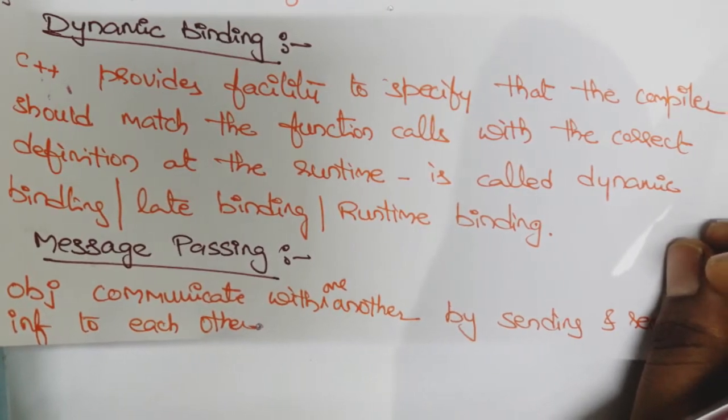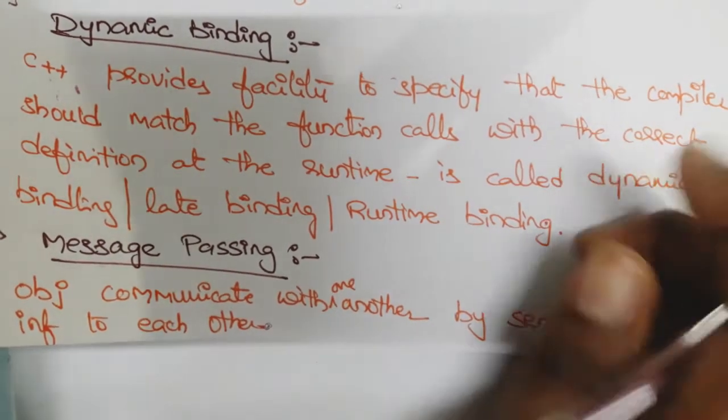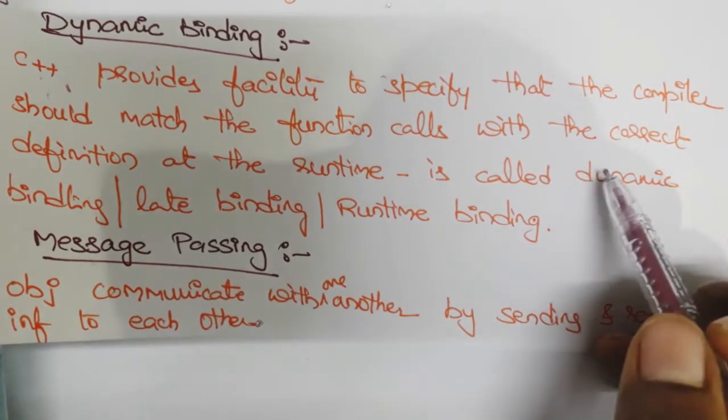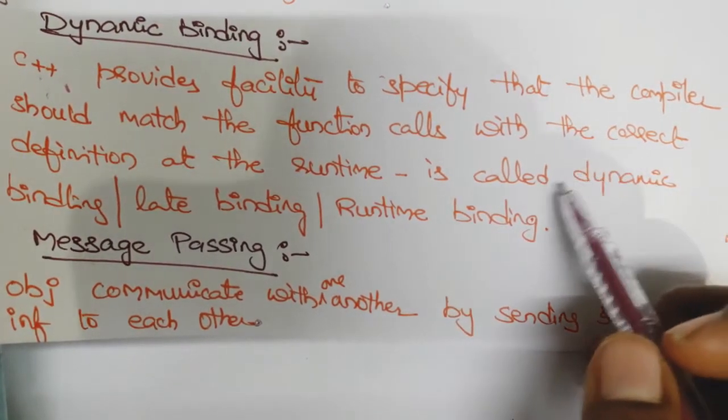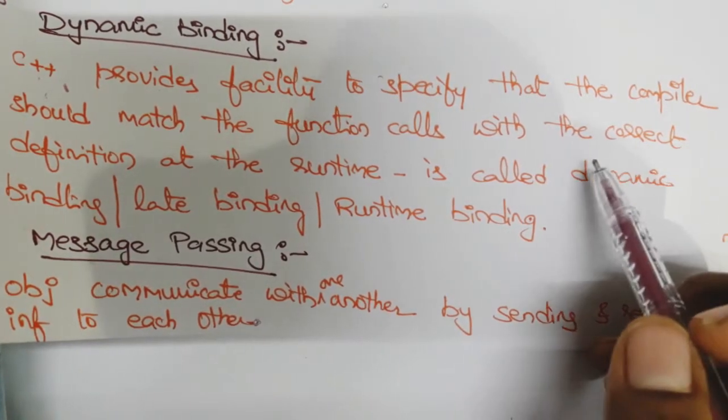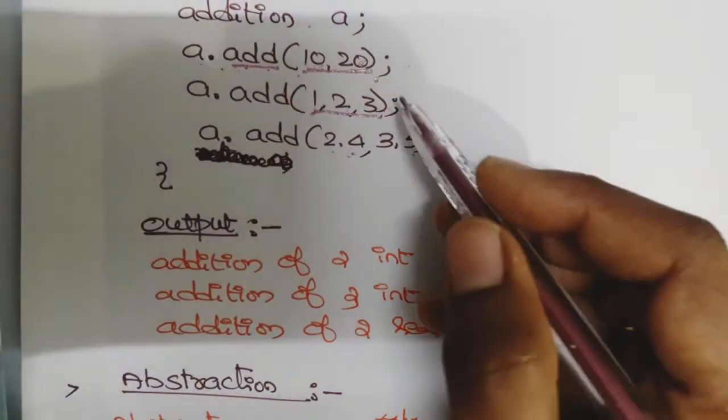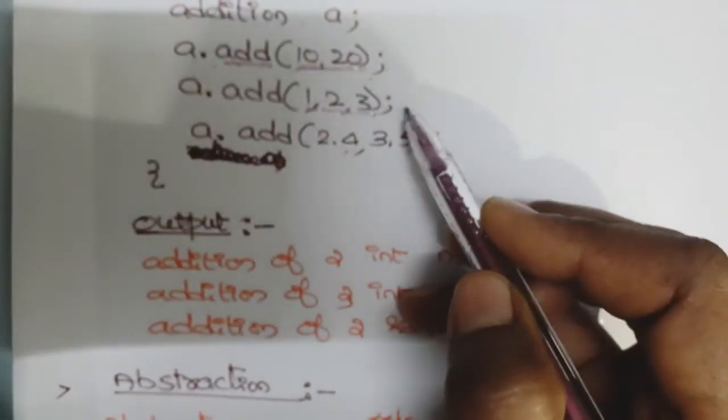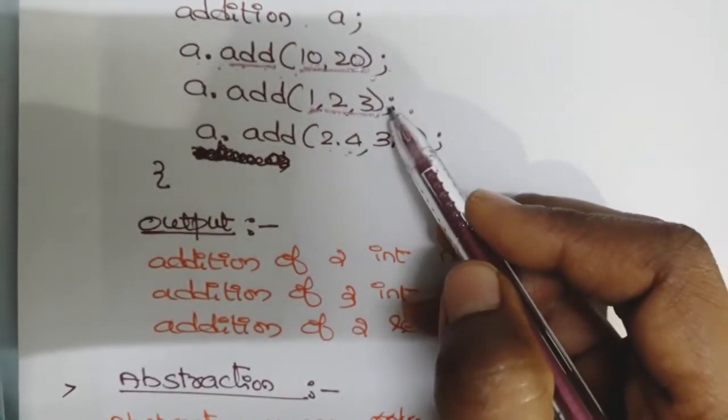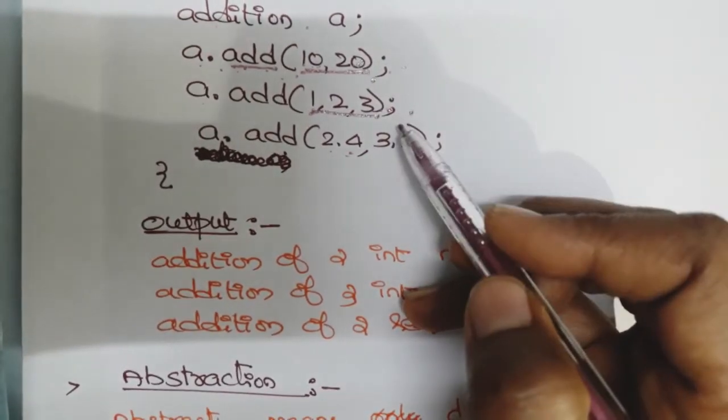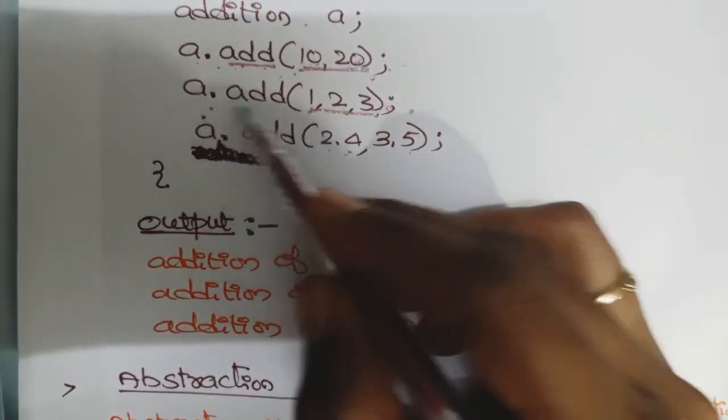When there are multiple function calls, the compiler should match the correct definition of the function call at runtime. For example, if you are calling a.add(1, 2, 3), the compiler will check which function has three integer parameters and call that particular function during runtime. This is dynamic binding.